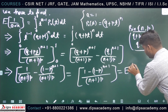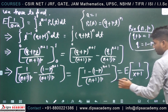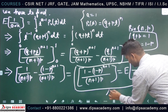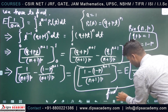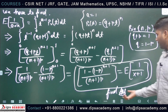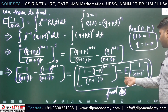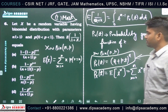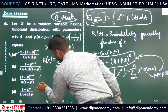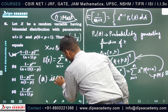So the final answer for the expectation of 1/(X+1) is: 1 minus (1-p)^(n+1) divided by (n+1)p. We can check our answer — option A is correct.